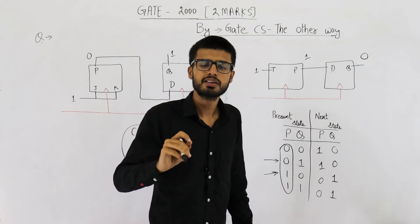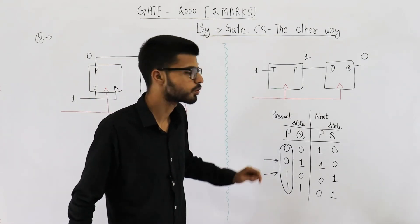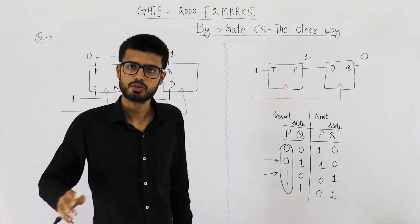So one zero. Actually this flip-flop will just alternate between these two values zero one one zero zero one one zero. That's it.